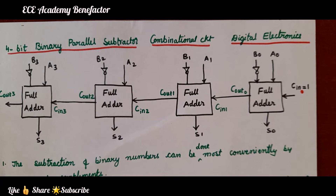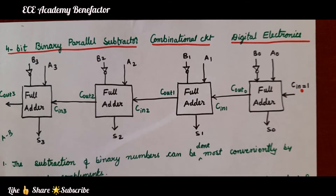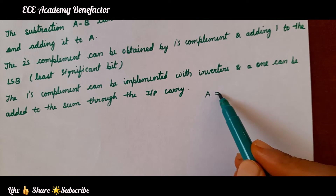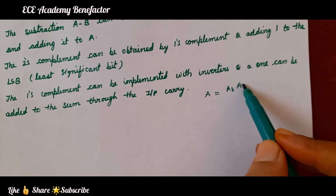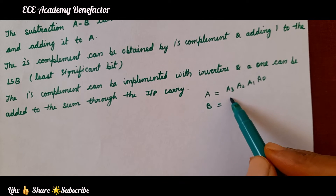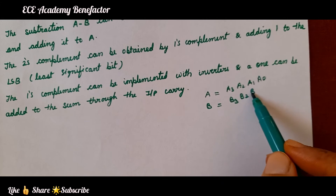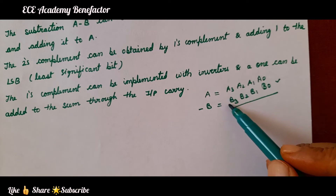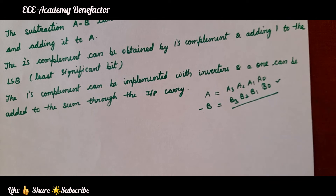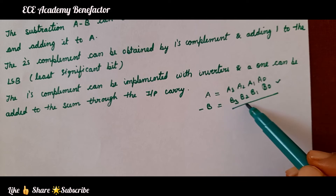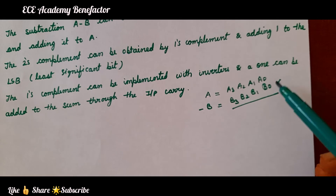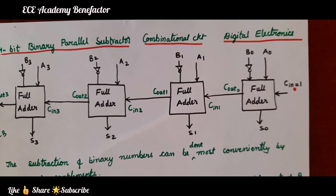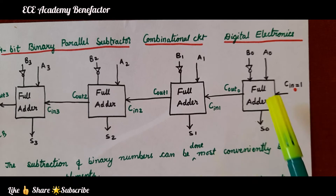The subtractor is used to subtract two numbers A minus B. A is a 4-bit number: A3, A2, A1, A0. And B is comprising of bits B3, B2, B1, and B0. We need to subtract these two. We will first find the 1's complement of B and add 1 to it — that is the 2's complement. The 1's complement can be found using an inverter, that is a NOT gate. After finding 2's complement of B, we will add it to A. We need full adders for it. For a 4-bit binary parallel subtractor, we require four full adders.